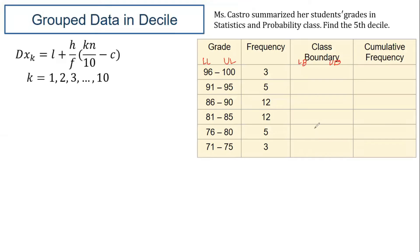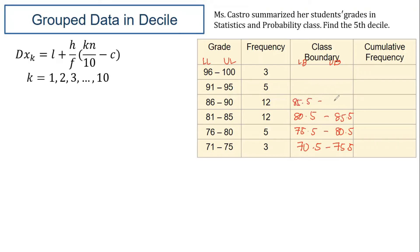Subtracting 0.5 from 71 gives 70.5, and adding 0.5 to 75 gives 75.5 for the upper boundary. Continuing this process for all class intervals: 75.5 to 80.5, 80.5 to 85.5, 85.5 to 90.5, 90.5 to 95.5, and 95.5 to 100.5.